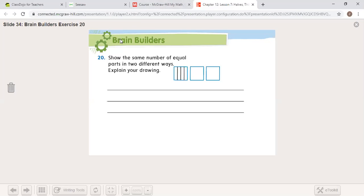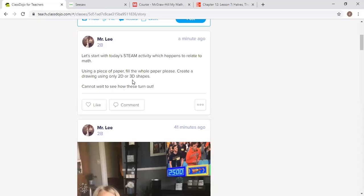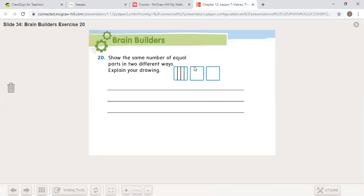I already added your STEM project to Class Dojo. With a piece of paper, use the whole paper. Don't just draw me a little tiny picture that I can't see. Use the whole paper to create a drawing using only 2D and 3D shapes. Have any questions? Let me know. I hope you guys have a great day. I'll see you on Thursday.